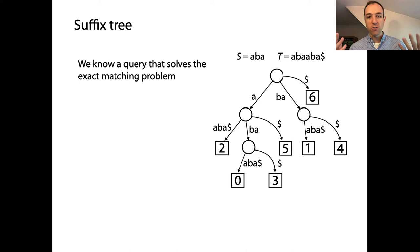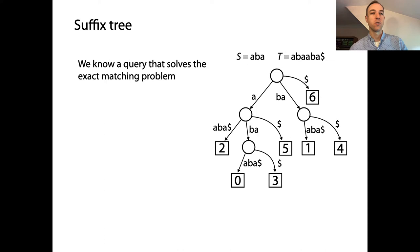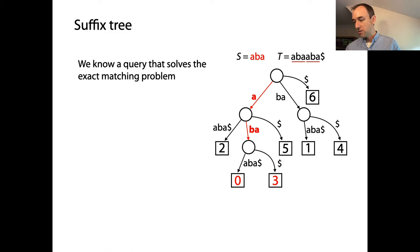We already have our basic query — the exact matching query — where we walk down from the root according to the characters of our pattern. If we want to know where those occurrences are, we traverse the subtree underneath where we stopped and report the offsets in the leaves. In this example, if our query was ABA, we'd walk down according to ABA and discover matches at offsets zero and three.